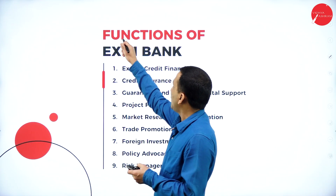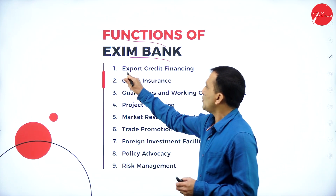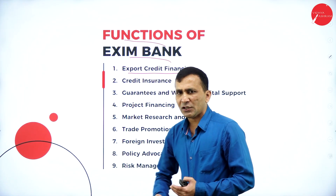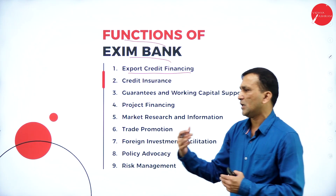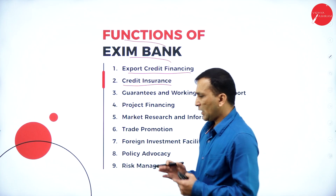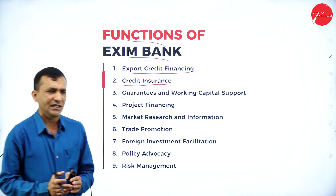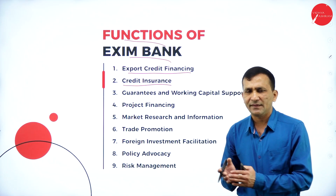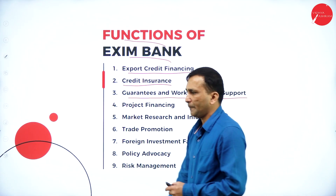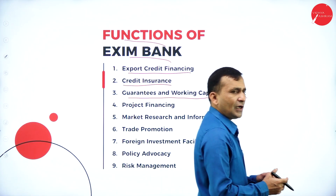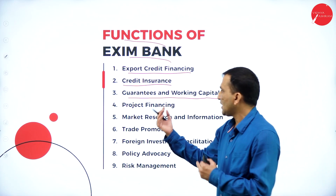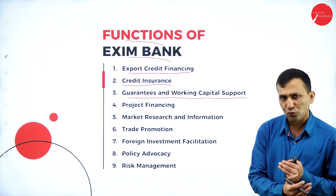Moving to the functions of EXIM Bank: the first is export credit financing — providing credit facility for exporting agriculture products, spare parts, components, or equipment where there is an abundant source. Next is credit insurance — while getting a credit facility, insurance covers against accidents or death to avoid future losses. Guarantee and working capital support involves EXIM Bank providing guarantees, for example guaranteeing payment to a Japanese company for machinery imports, along with working capital to run business smoothly.